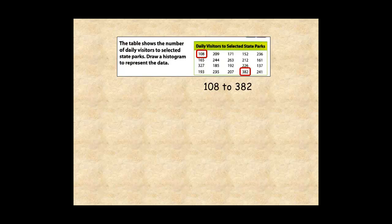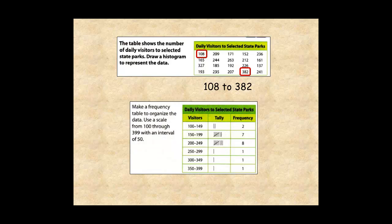So next, create a frequency table, ranging from 100 to 400, with intervals 50 units wide.